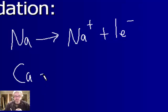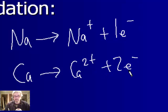Or calcium. Calcium becomes a two-plus ion, like all column twos, and that means it's going to have to give up two electrons. Those are examples of what we call oxidation.